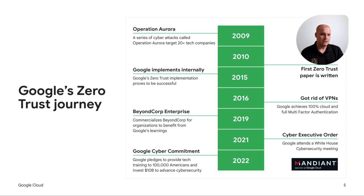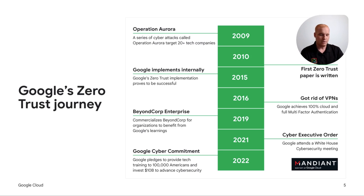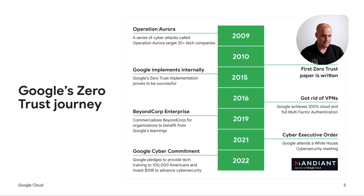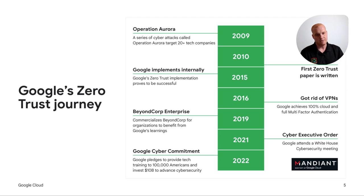In 2015, Google implemented Zero Trust controls internally. It was so effective that a year later, we got rid of our virtual private networks and moved into a 100% multi-factor based approach. Nearly a decade into that journey, in 2019, we decided we wanted to share these lessons and productized it in BeyondCorp Enterprise — the industry's first Zero Trust enterprise offering to help customers secure their workloads with these new practices and principles.